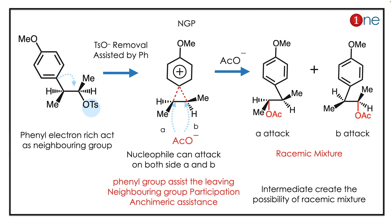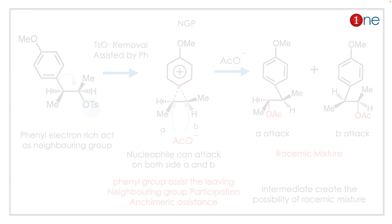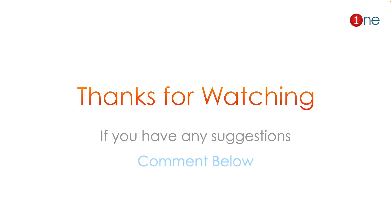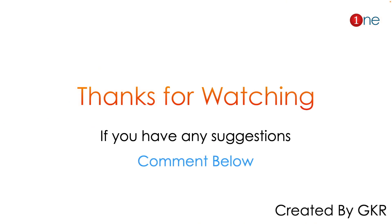The ring opens and you have OAc attack at the two position. If you look at it technically, it is a racemic mixture — the intermediate formation promotes the racemic mixture. The key concept to understand here is neighboring group participation: the phenyl group can act as the neighboring group.